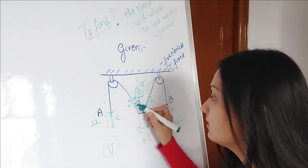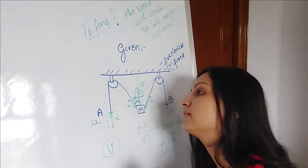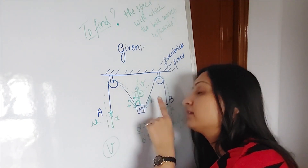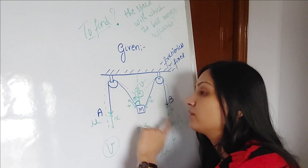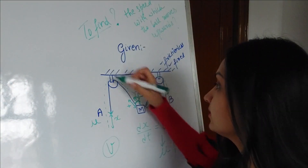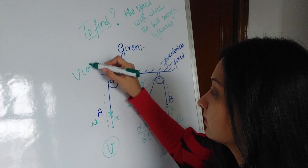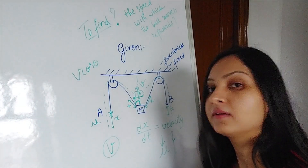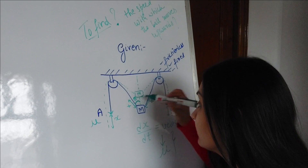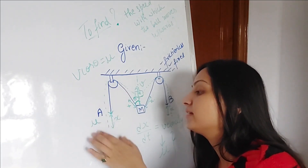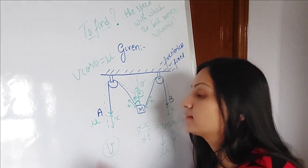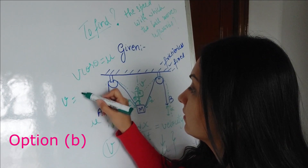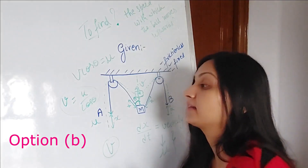This angle theta is given in the problem. The decrease in the upper string length is causing an increase in the lower length. You take the component of the ball's velocity v along the length of the thread, which is v cos θ. The component of v along the thread that is decreasing the thread length must equal the speed u that is increasing the thread length on the other side. Therefore, v cos θ = u, which gives v = u/cos θ. That is your answer.